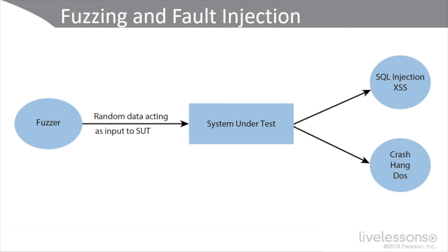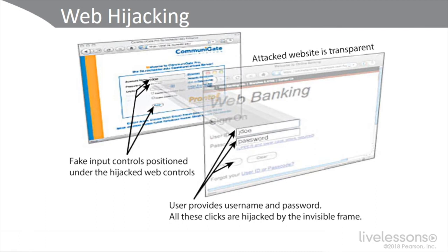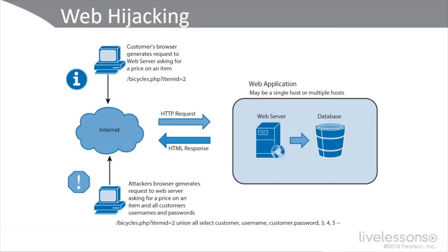Web hijacking is also a very common attack, where fake input controls are positioned under hijacked web controls. The user goes to their banking site, puts in their username and password, and all their clicks are hijacked by an invisible frame in the actual web page — completely transparent to the client. The attacker's browser generates requests to the web server asking for a price on an item as well as all the customer's usernames and passwords.